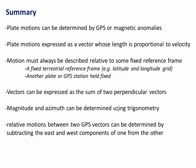So in summary, plate motions can be determined by GPS or by magnetic anomalies at spreading ridges. Plate motions can always be expressed as a vector whose angle shows the direction and whose length is proportional to velocity. That plate motion or that vector motion must always be described relative to a fixed reference frame. So that could either be some terrestrial reference frame, like a latitude and longitude grid that's held fixed, or we could hold another tectonic plate or another GPS station fixed. But something has to be fixed.